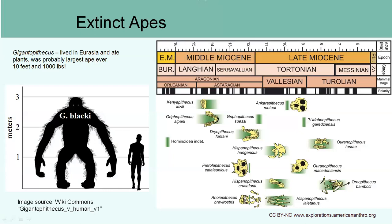There are many other extinct apes covered in the textbook, but one of the most interesting is Gigantopithecus — probably the largest ape that has ever existed. It was over 10 feet tall and may have weighed around a thousand pounds. Some suggest the Bigfoot myth may derive from people finding its bones. Despite its enormous size, Gigantopithecus was actually a plant-eater — a gentle giant — but it went extinct when the environment changed.